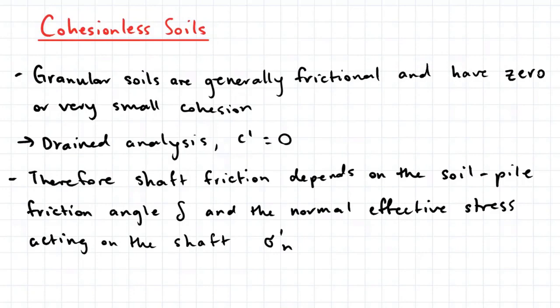Let's now talk about the ultimate axial capacity in cohesionless soils. So granular soils are generally frictional and have zero or very small cohesion. Thus we can use a drain analysis and assume C prime to equal to zero.